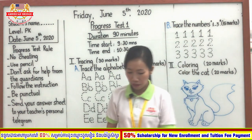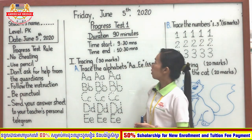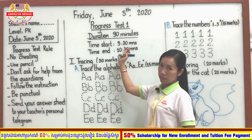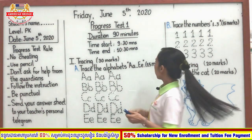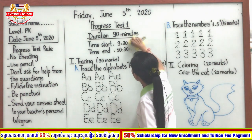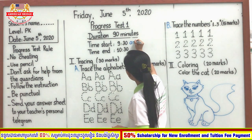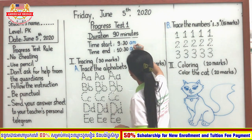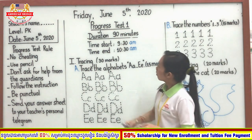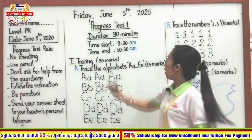I will tell you some information. Today we have progress test one. The duration is 90 minutes. We will start at 9:30 a.m. until 10:30 a.m.